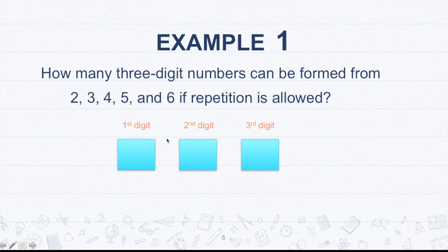So the first digit, second digit, third digit. So if repetition is allowed and we have 2, 3, 4, 5, and 6, we have five numbers to choose from. So definitely, we have five choices or five options for this box.